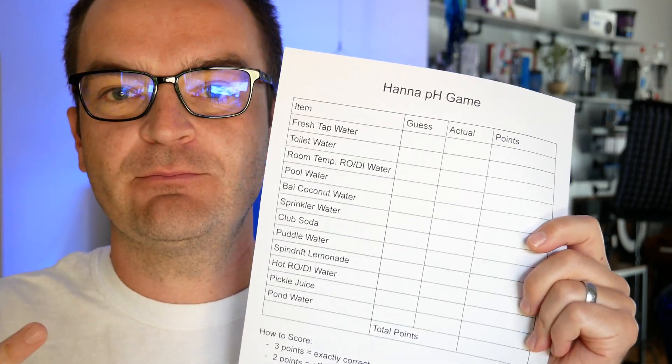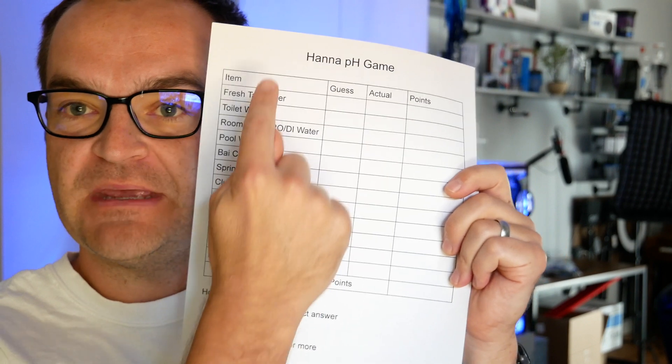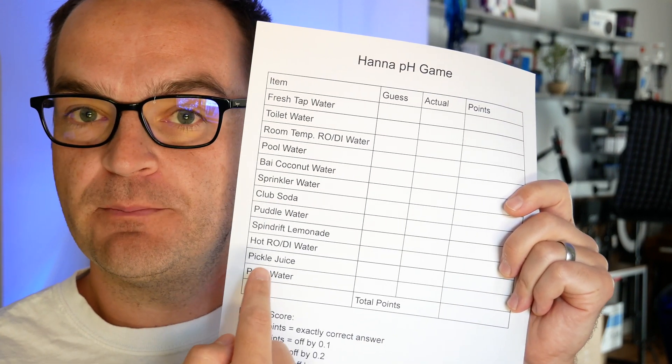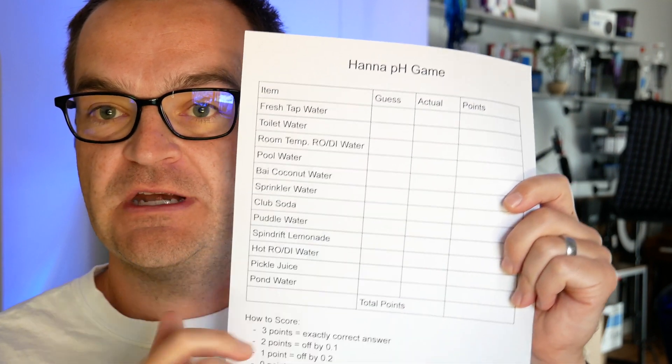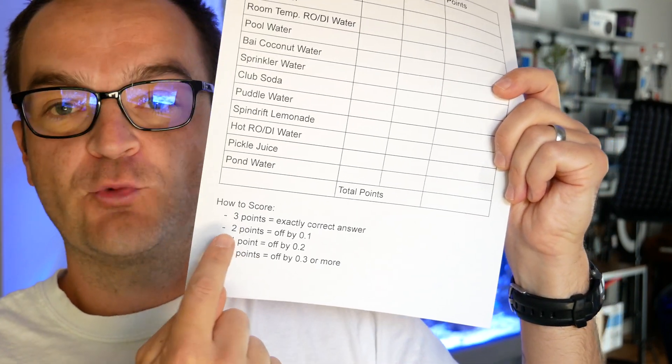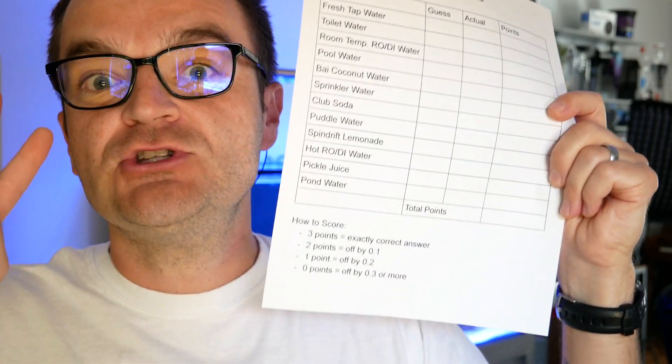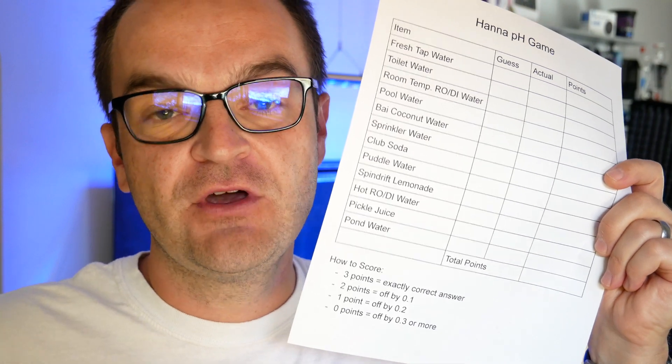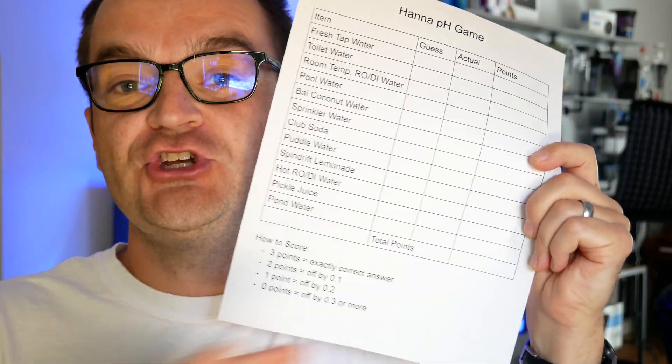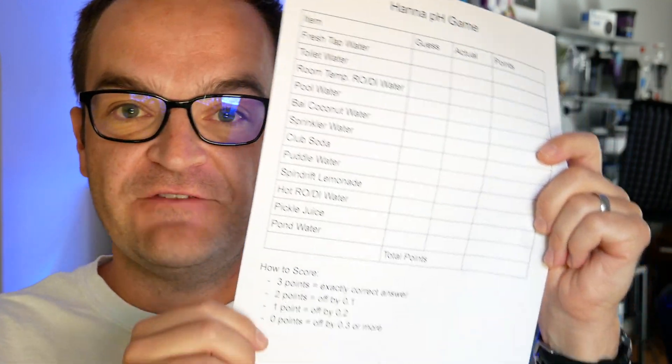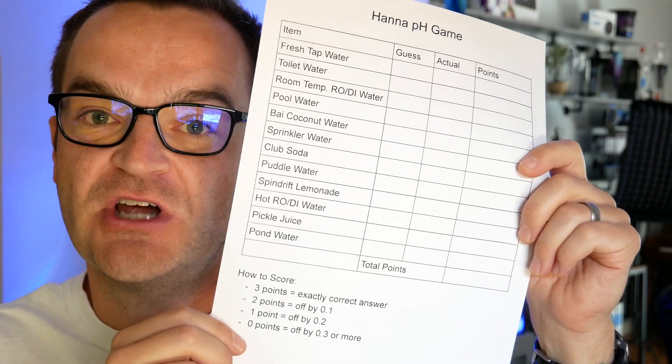So 8.1, 7.9, what you think the pH of that item will be. Then when we test it, we're going to put the answer over here. You're going to score three points if you're exactly right, two points if you're off by a tenth, one point if you're off by two tenths, and zero points if you're three tenths off.